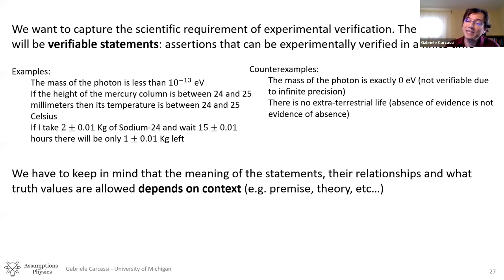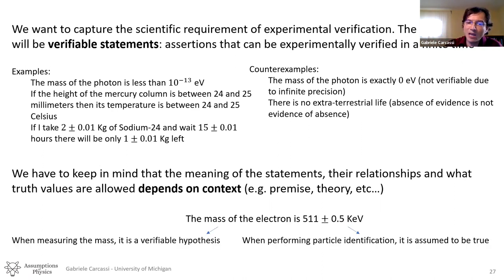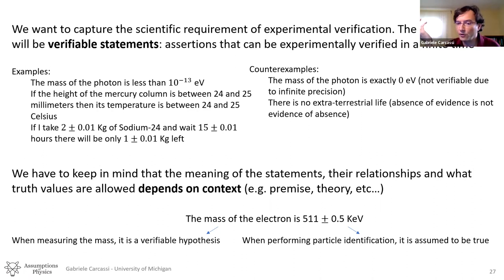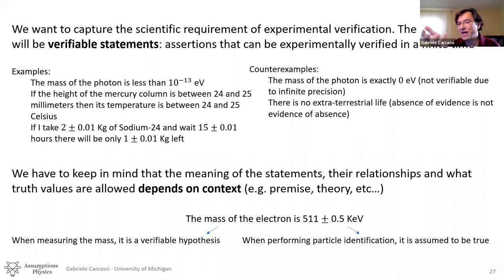The meaning of statements, their relationships, and their truth values depend on the context — on the premises, on the theory, on boundary conditions. Even the statement 'the mass of the electron is 511 ± 0.5 keV' plays different roles in different contexts. When measuring the mass, it is a verifiable hypothesis that could be true or false. But when performing particle identification in a detector, we assume it to be true so that when we see a trajectory with the right mass we can say 'that must be an electron.' So the role of that statement changes depending on the context and what we're trying to do.